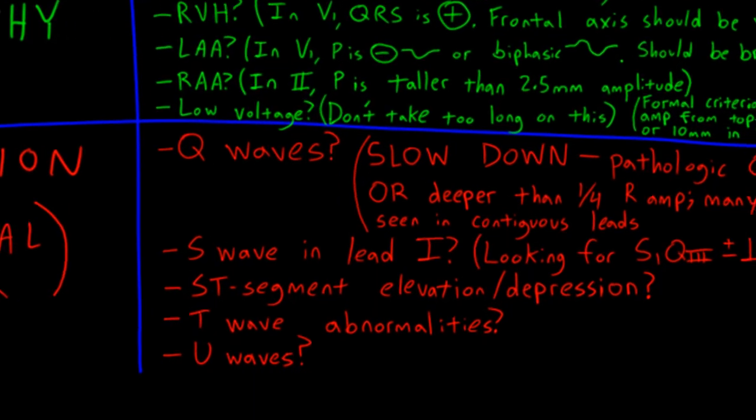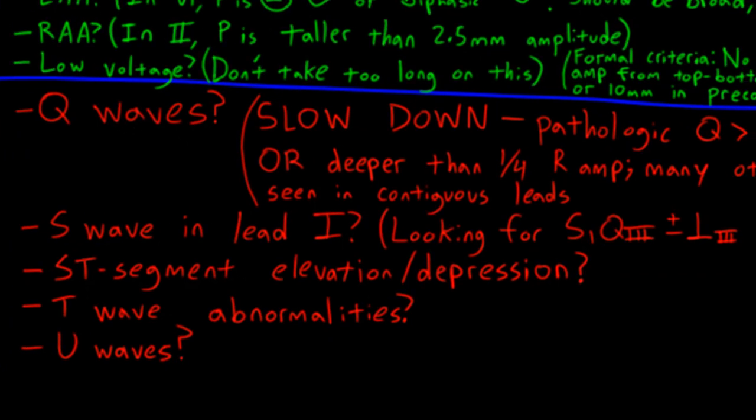I like to start by looking for pathologic Q waves, which indicate necrosis from MI. Pathologic Q waves are extremely easy to miss. I'd estimate that when pathologic Q waves are present on an EKG, there is approximately an 85% chance that the medical student has missed them. Interns do a little bit better, and residents do a lot better, but once you start getting to the level of faculty member, Q wave detection can sometimes start getting spotty again. So this is a step that really everyone should slow down for.